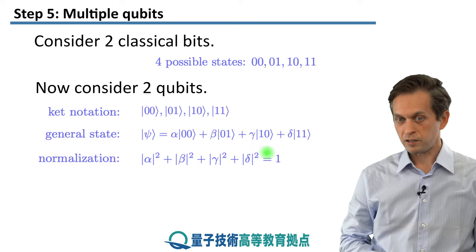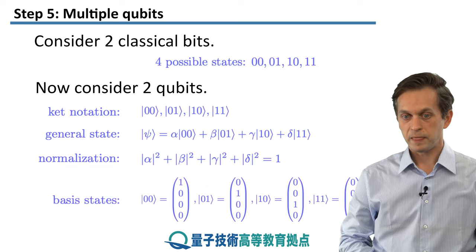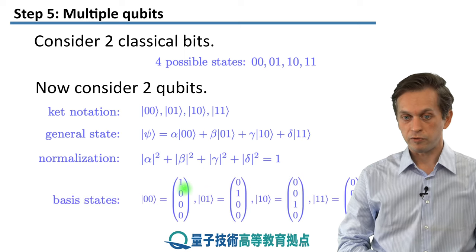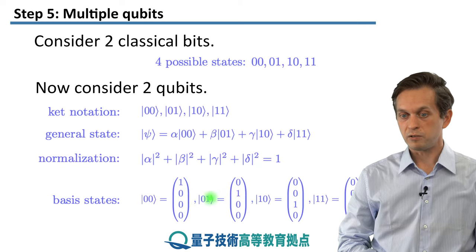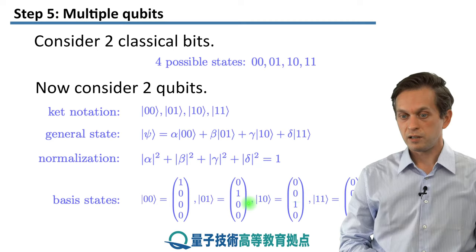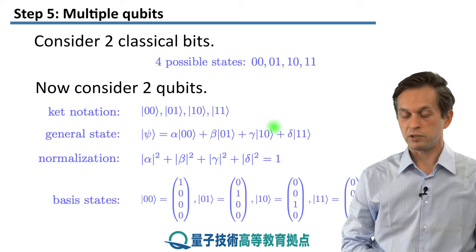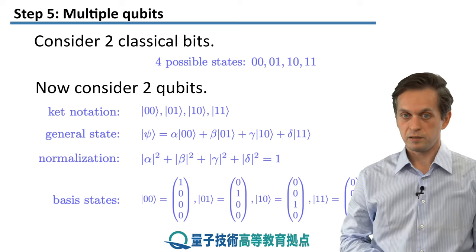In vector notation, we can write these kets as follows. The ket |00⟩ is now a column vector of four elements: 1, 0, 0, 0. Similarly for ket |01⟩, |10⟩, and |11⟩. So this forms a nice orthogonal basis with which we can express any general state psi.